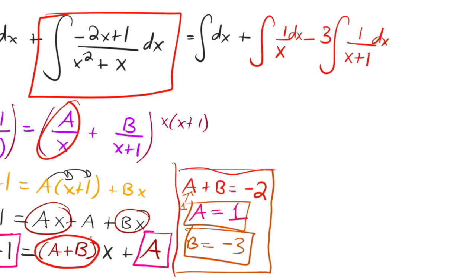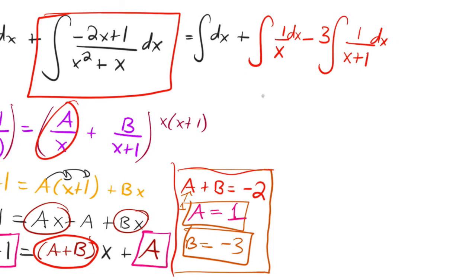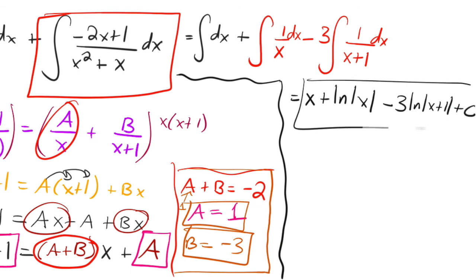Okay. So off we go then. So the anti-derivative of this is just x plus the anti-derivative of 1 over x is natural log absolute value of x. And then minus 3, the anti-derivative of 1 over x plus 1 is natural log absolute value of x plus 1. And then plus c. And that's it.